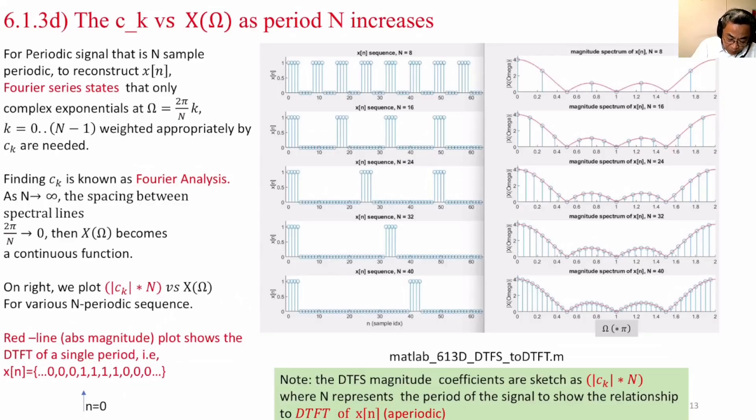In this figure, we will briefly introduce the relationship between Ck and X omega as period N increases. That means given a periodic sequence, when we analyze Ck and X omega, what happens?